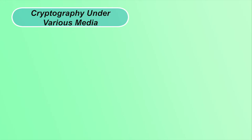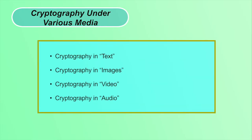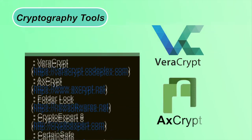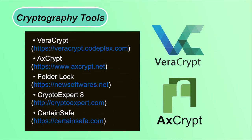Cryptography can be applied to any media — input can be text, images, audio, video, etc. The encryption algorithm converts the original input to cipher form, and the decryption algorithm converts it back. Various cryptography tools exist such as VeraCrypt, xCrypt, Folder Lock, CryptoExpert8, and CertainSafe, which have algorithms like DES, 3DES, RSA, and AES already implemented. These open-source tools are freely available on the internet and require no manual implementation of encryption algorithms.